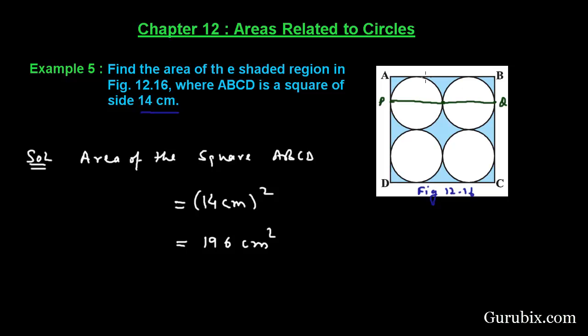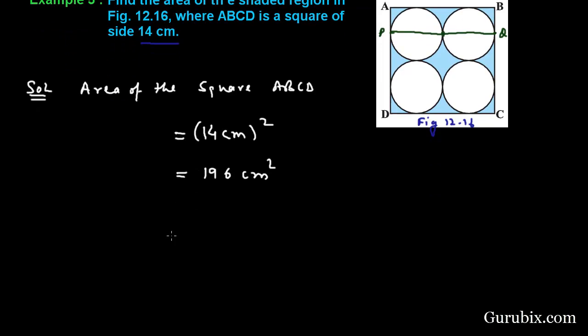Half of PQ will be half of 14 centimeters, this means 7 centimeters. Then half of AB will be the diameter of one circle, so the radius will be 7 over 2. Therefore, radius of the circle will be 7 over 2 centimeters.